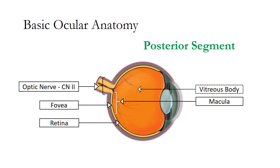The fovea contains cones that transmit a highly defined color image. The cones work best under high light conditions. The macula is a transitional area composed of rods and cones. The remaining area of the retina is composed of rods. The rods are most active at low light levels and transmit in black and white.